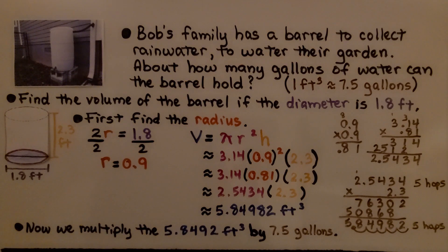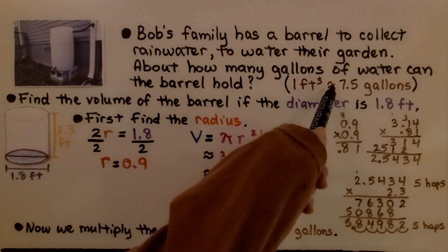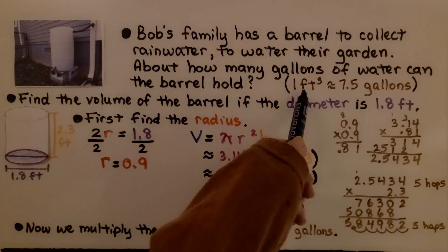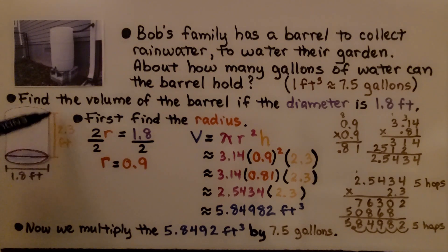Bob's family has a rain barrel to collect rainwater to water their garden. About how many gallons of water can the barrel hold? We're given that one cubic foot is approximately 7.5 gallons. We need to find the volume of the barrel if the diameter is 1.8 feet and the height shown in the diagram is 2.3 feet.